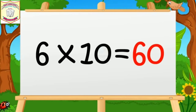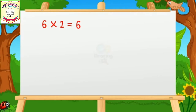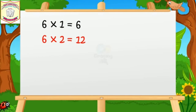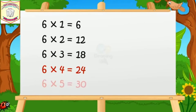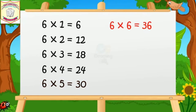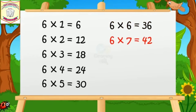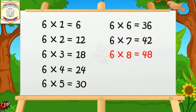Six tens are sixty. Six ones are six. Six twos are twelve. Six threes are eighteen. Six fours are twenty-four. Six fives are thirty. Six sixes are thirty-six. Six sevens are forty-two. Six eights are forty-eight.